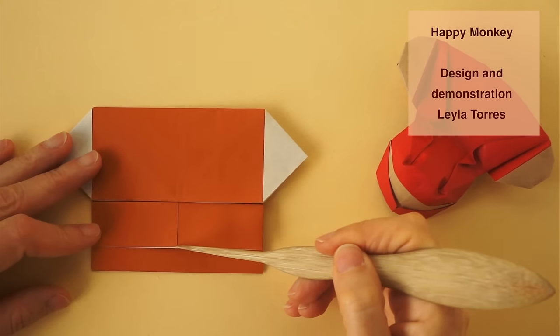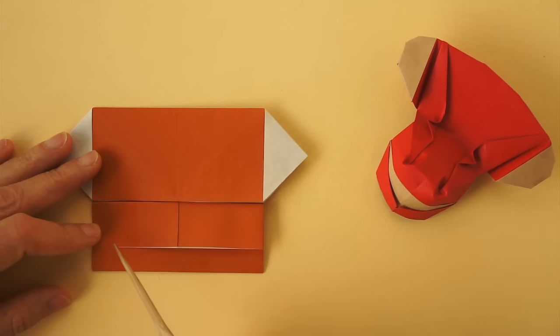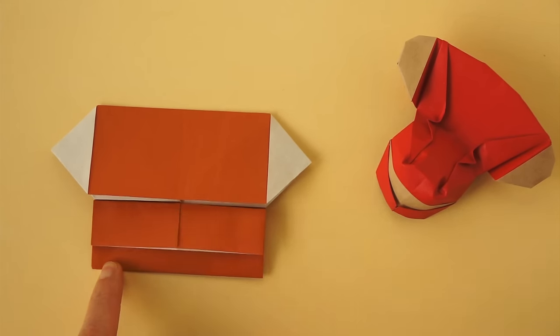We are going to attach this edge. We are going to bring this corner up to touch this edge, and we are going to make a fold that goes from this edge in a little bit to here.